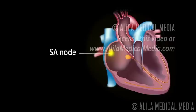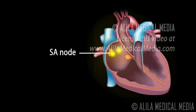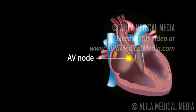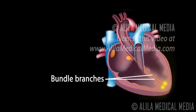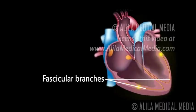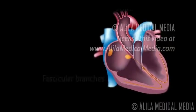The heart's electrical signals are initiated in its natural pacemaker, the sinoatrial node, or SA node, and travel through the atria to reach the atrioventricular node, or AV node. The AV node is the gateway to the ventricles. The AV node passes the signals onto the bundle of His. This bundle is then divided into left and right bundle branches, which conduct the impulses towards the apex of the heart.